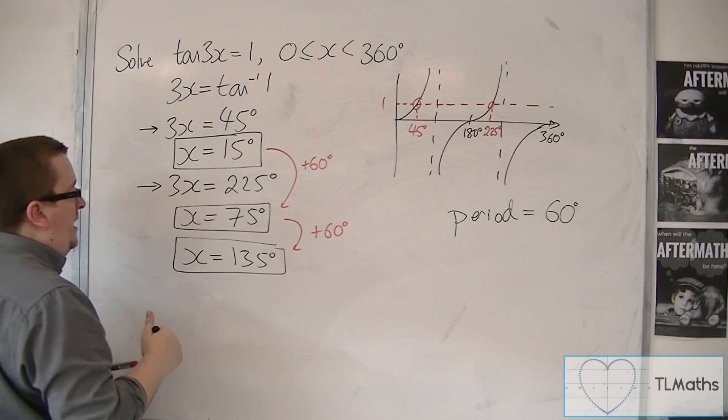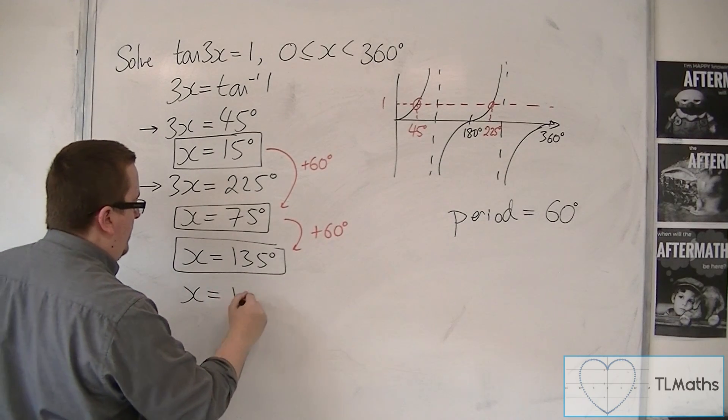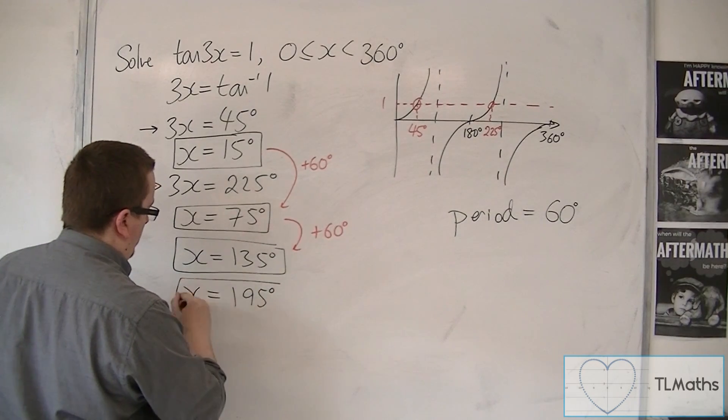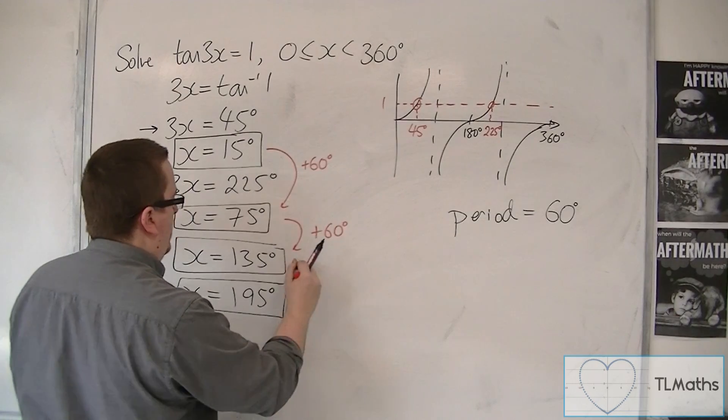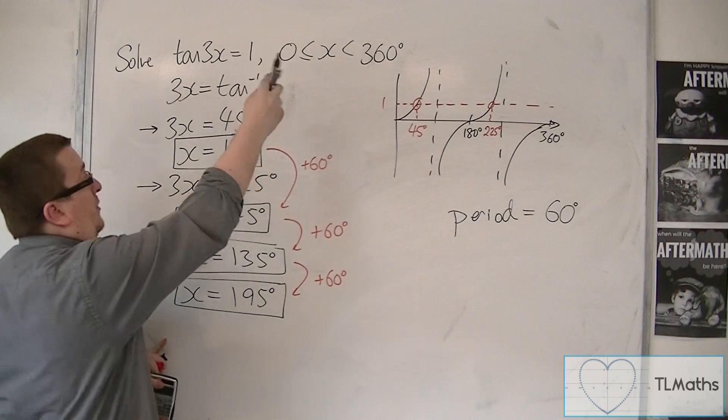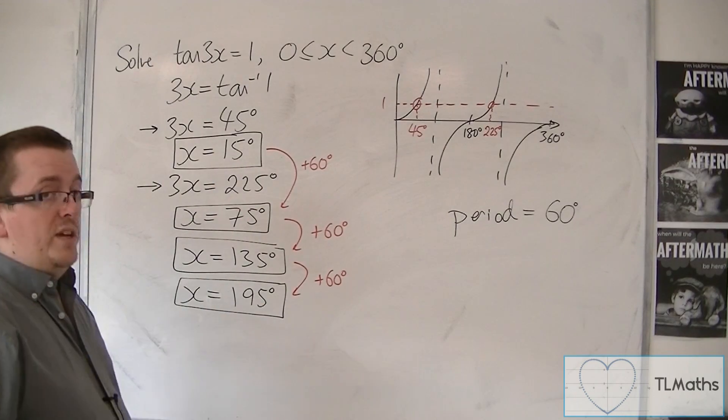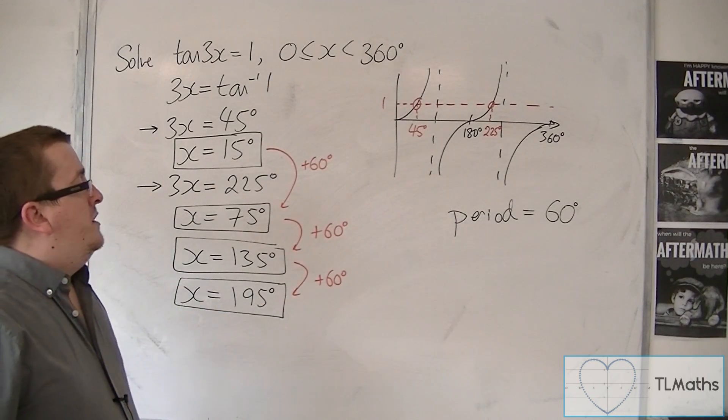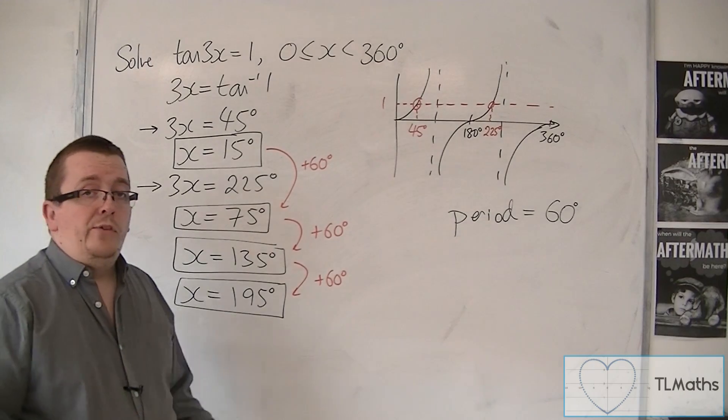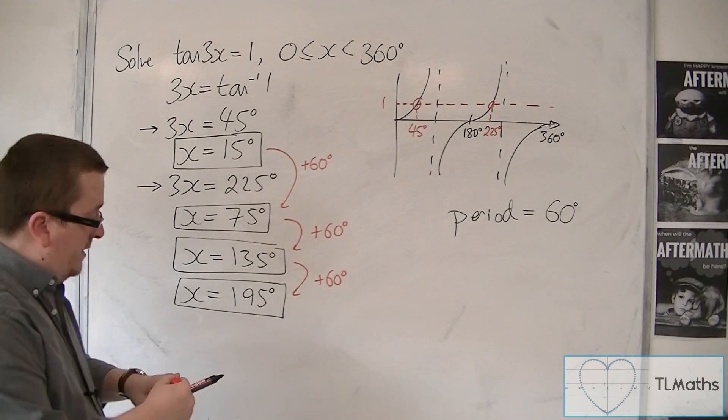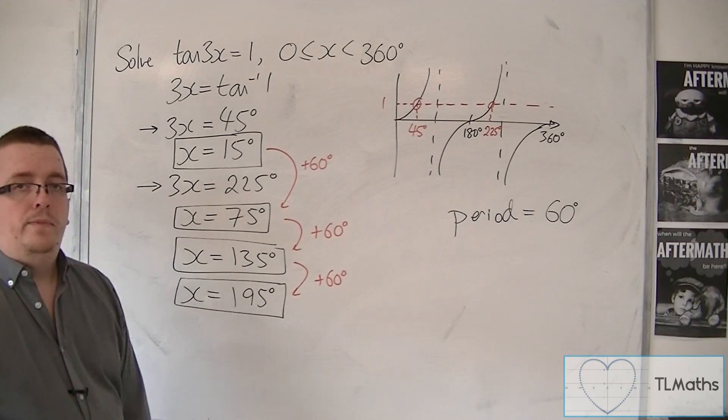So let's keep going. Add another 60. So that's another solution. Keep a check that we have to be between 0 and 360. We don't want to go over that. It's worth also asking yourselves, how many solutions do we expect? We've found four of them.